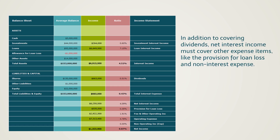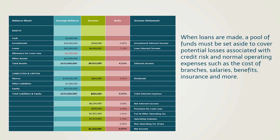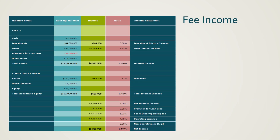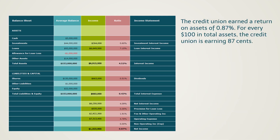In addition to covering dividends, net interest income must cover other expense items, like the provision for loan loss and non-interest expense. This is due to the fact that when we make loans, we must set aside a pool of funds to cover potential losses associated with credit risk. And like any business, we have normal operating expenses such as the cost of branches, salaries and benefits, insurance, and more. Fee income is a smaller source of revenue, which can help offset operating expenses. After adding in fee income and subtracting expenses, the credit union's earnings were $1.3 million. This means the credit union earned a return on assets of 0.87%. For every $100 in total assets, the credit union is earning $0.87.